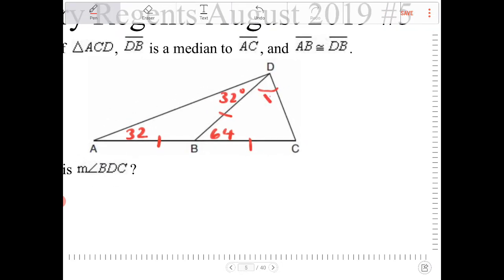Let's call this angle X. Therefore this angle must also be X. So I can say 2X plus 64 equals 180.